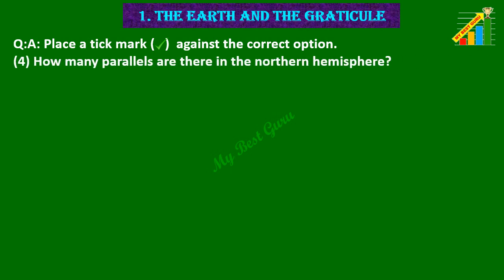4. How many parallels are there in the northern hemisphere? Options are 90, 89, 91. Correct option is 90. So there are 90 parallels in the northern hemisphere.